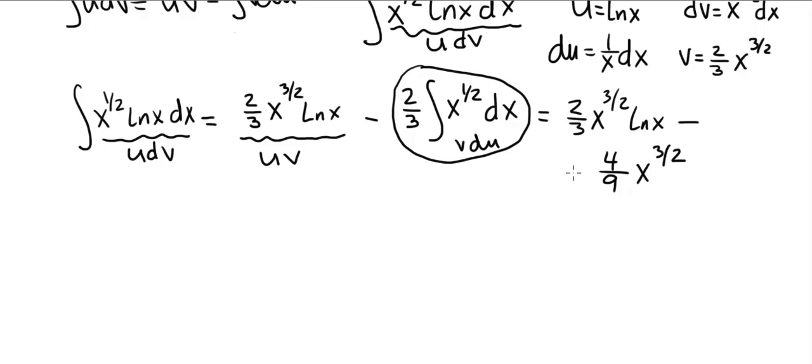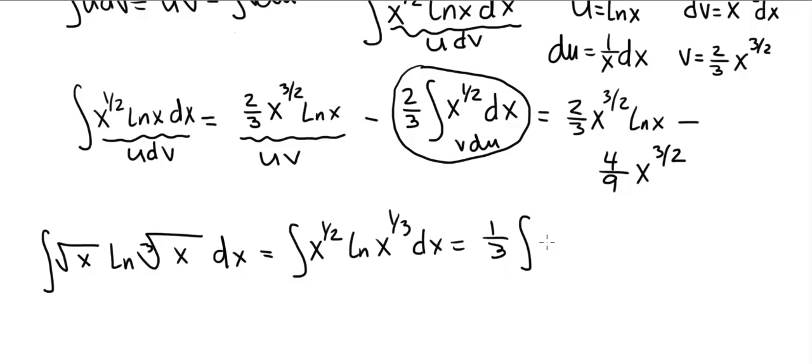That's the integral. Now let's return to the original problem. The original problem was integrate square root of x ln of the cube root of x. We expressed that as x to the one-half times ln of x to the one-third. We brought the one-third down in front and wanted to evaluate x to the one-half ln of x. We just did that. So this is one-third times two-thirds x to the three-halves ln of x. Minus four over nine x to the three-halves.